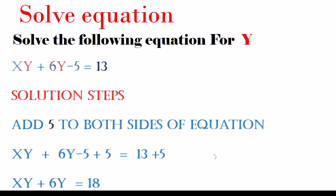So adding 5 to both sides of the equation, we have minus 5 plus 5 — it became 0. Because when you have the same number with a different sign, they become 0. And the new equation looks this way: x times y plus 6 times y equals 18.